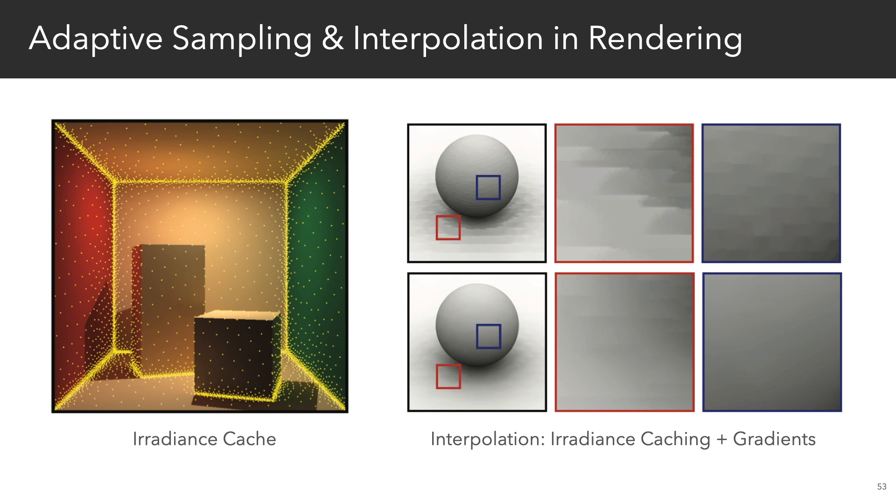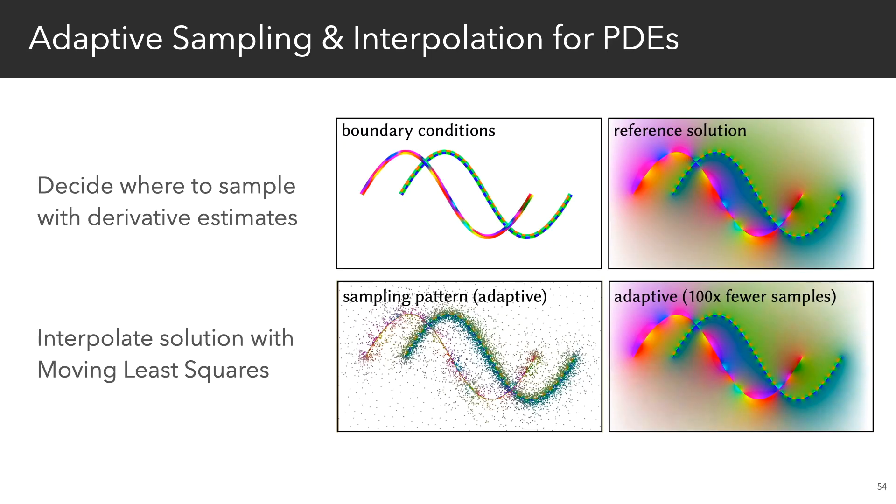In rendering, techniques such as irradiance caching and photon mapping were developed to reduce noise through adaptive sampling. In our setting, we can also concentrate sampling effort by computing Taylor expansions of the solution with the derivative estimates we get from walk-on spheres. And this lets us place samples in regions with high-frequency boundary conditions. And we use moving least squares to interpolate the solution everywhere else.